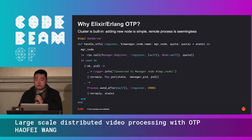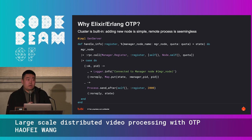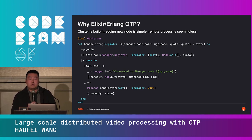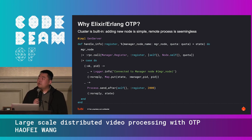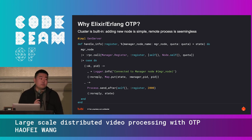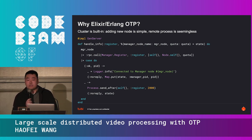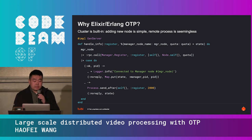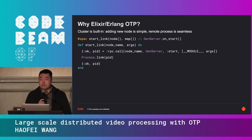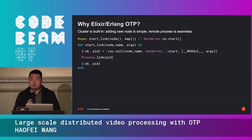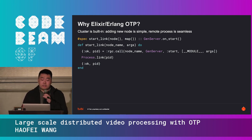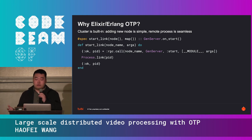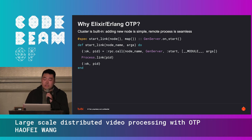The second reason Elixir and OTP really helps is that clustering is built in. We sometimes need to process a large batch of content, and OTP makes adding a new node very simple — just a few lines of code to get a new node that increases our processing power whenever needed. Remote process management is also seamless; a simple RPC call can start a new task or a new GenServer on a completely different node.